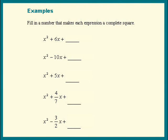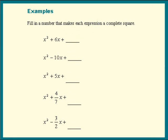Our job is to fill in a number that makes each expression a complete square. Ready? The first one we see has a 6 in the middle. What's the method? Take half of the coefficient and square it. Take half of 6, we get 3. Square the 3, we get 9. That's right.